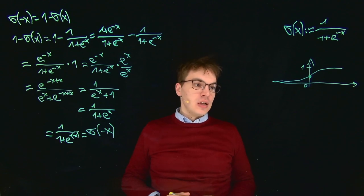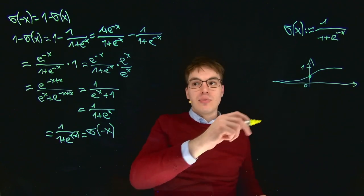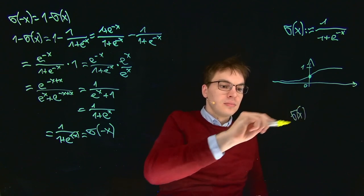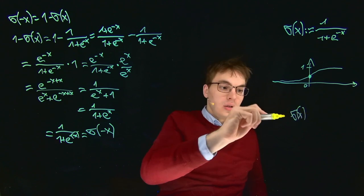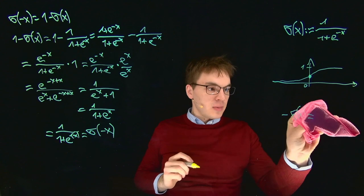So normally, if we have a curve that is point symmetric with our origin zero zero, then we would get something like this.